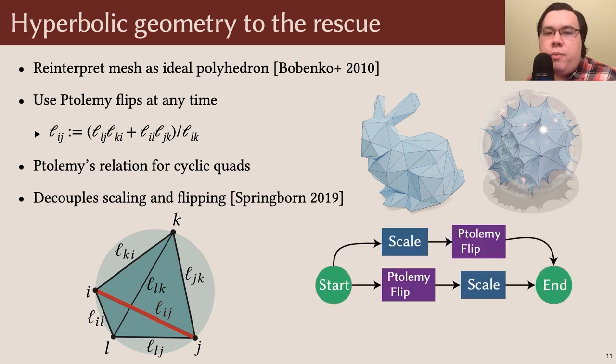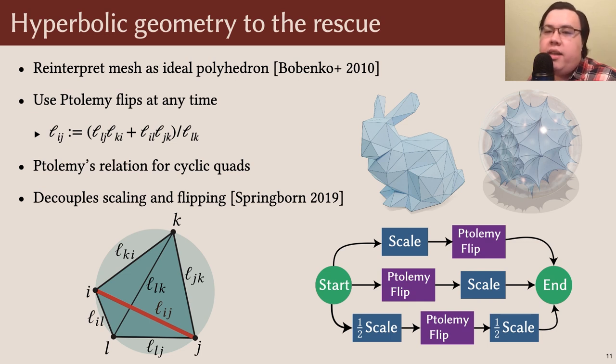The important thing about these Ptolemy flips is that they're decoupled from vertex scaling. You can rescale and then flip, or flip and then rescale, or even rescale partway and then flip and then rescale the rest of the way, and you'll always get the same answer. This enables us to defer flips until absolutely necessary, rather than pausing our flow to flip exactly when the Delaunay condition is first violated.